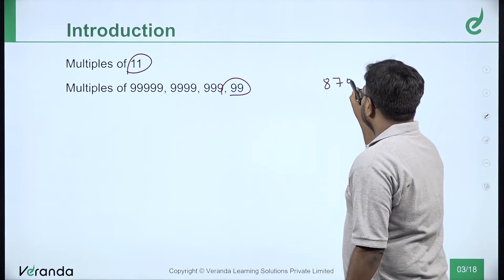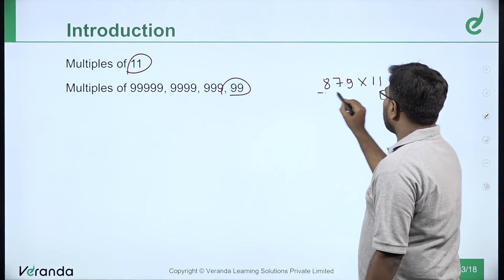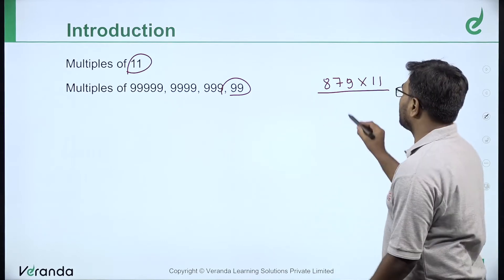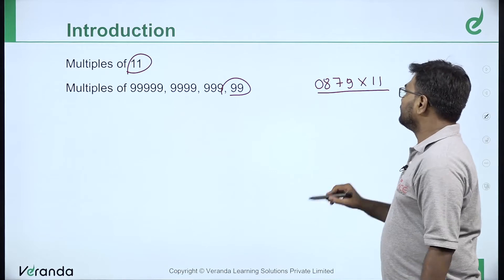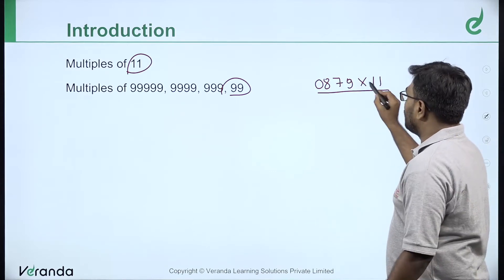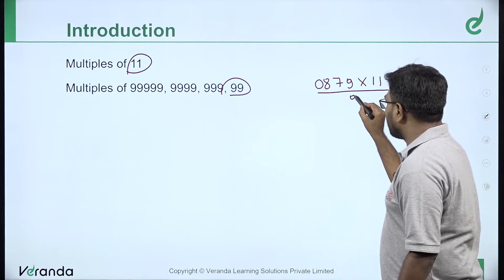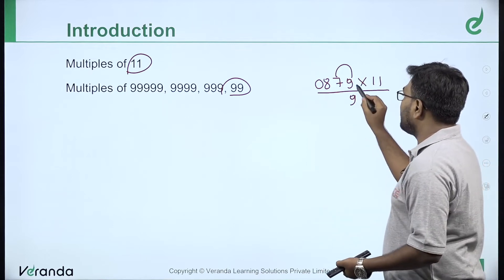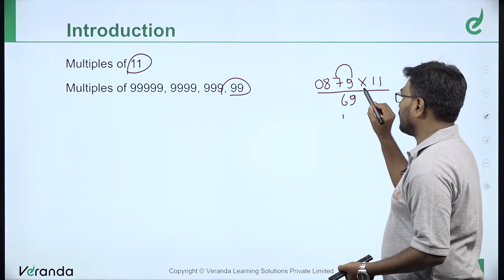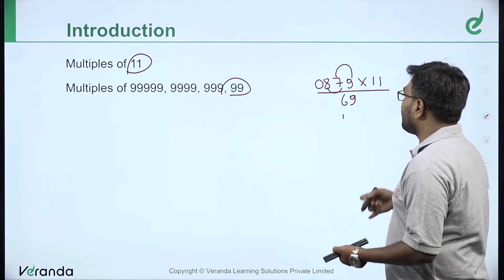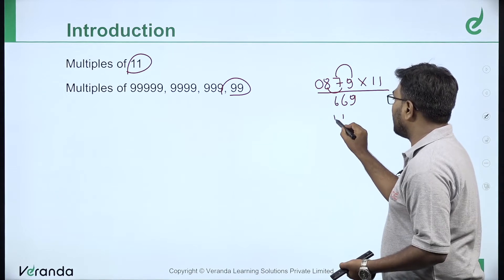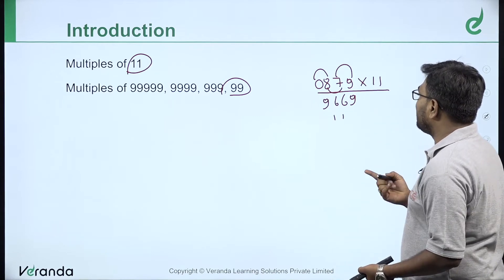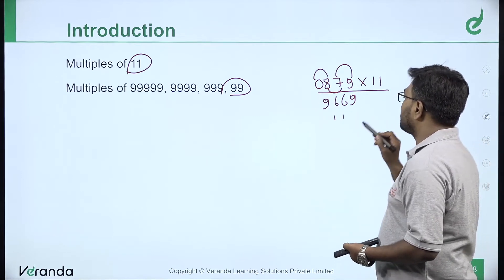Let's apply 11 multiplication. For example, 879 into 11. Add a 0. Any number multiplied by 11: first, 3 digits are 9. Now, 7 plus 9 add: 7 and 9 add, that's 16 — write 6, carry 1. Then 8 plus 7 is 15, plus 1 is 16, carry 1. Then 0 plus 8 is 8, plus 1 is 9. Your answer: 879 into 11 is 9669. That's the answer.